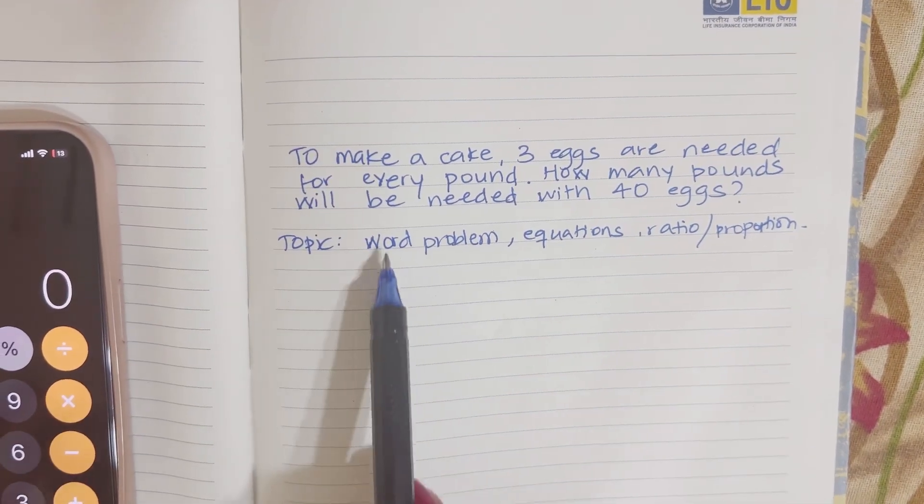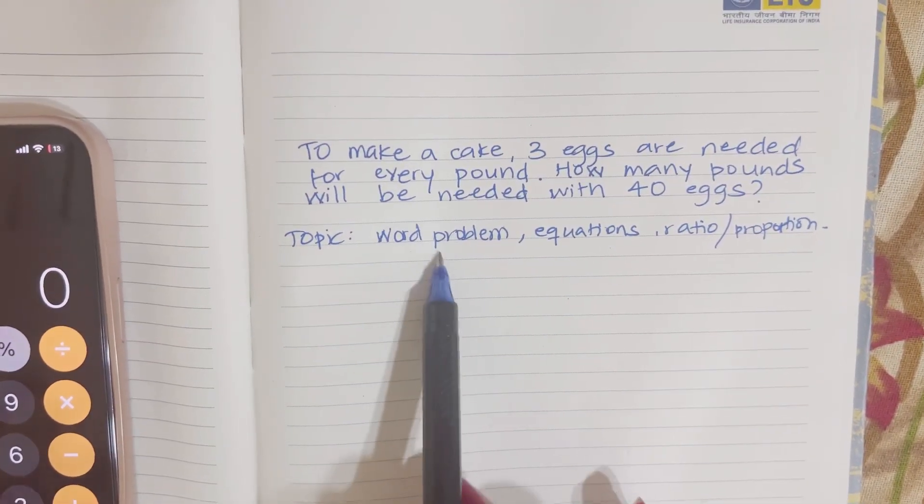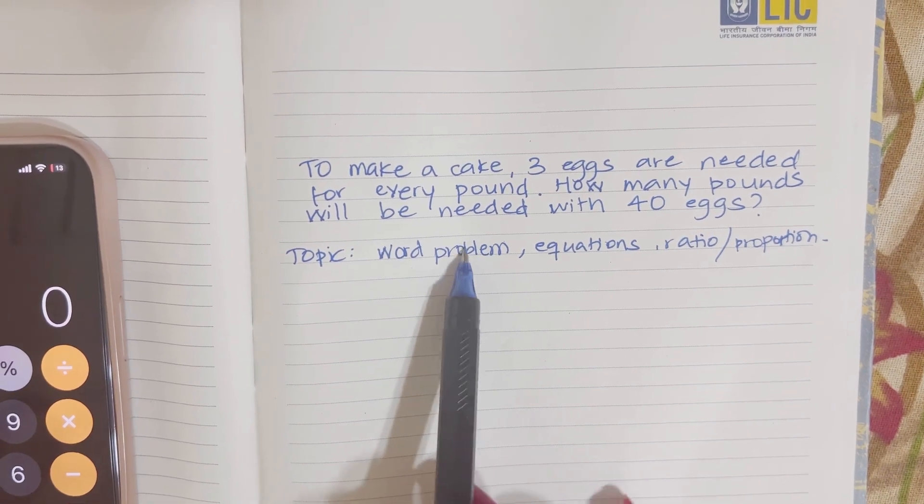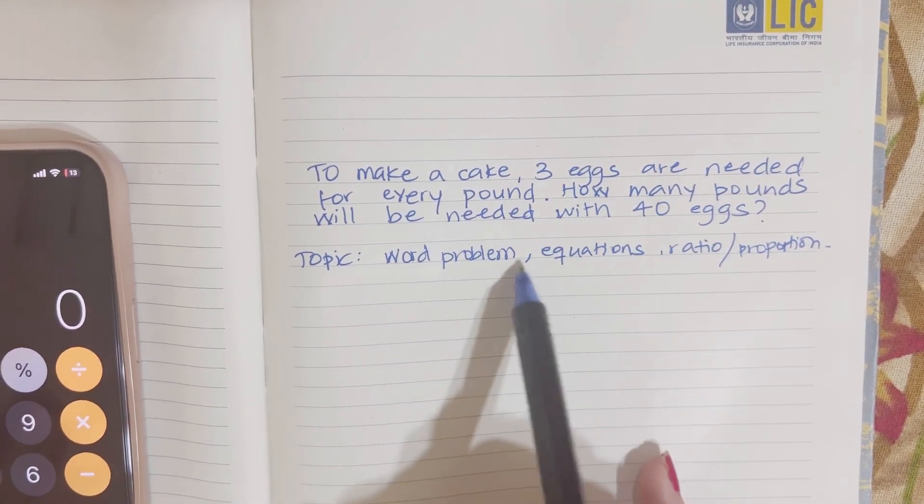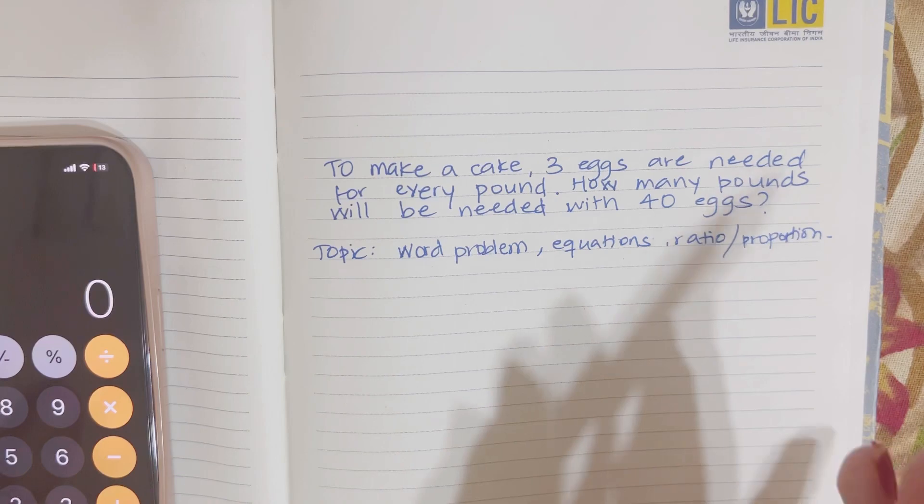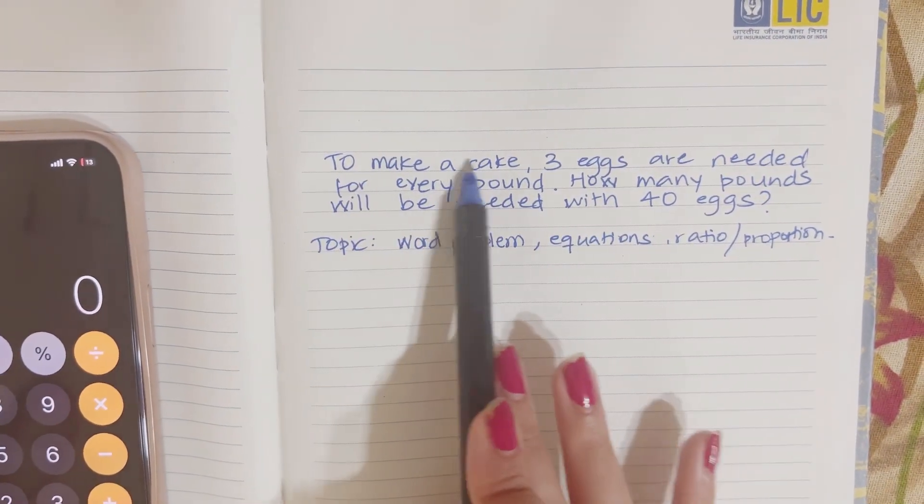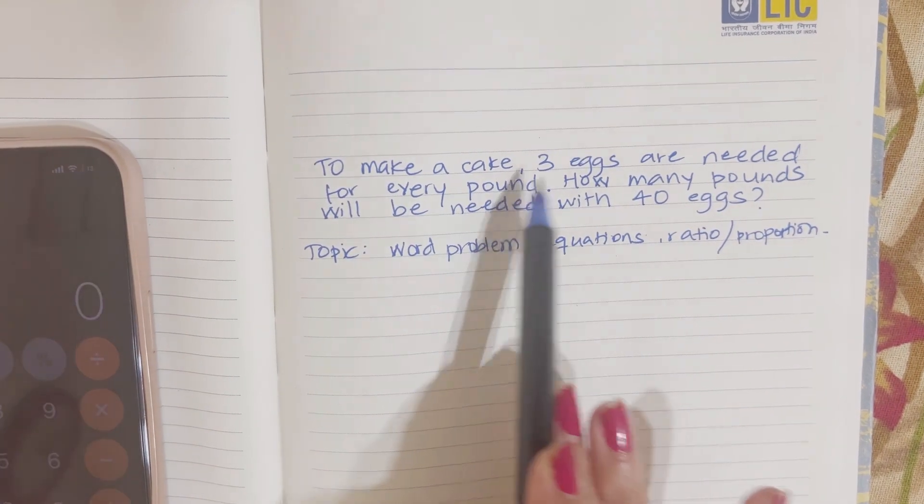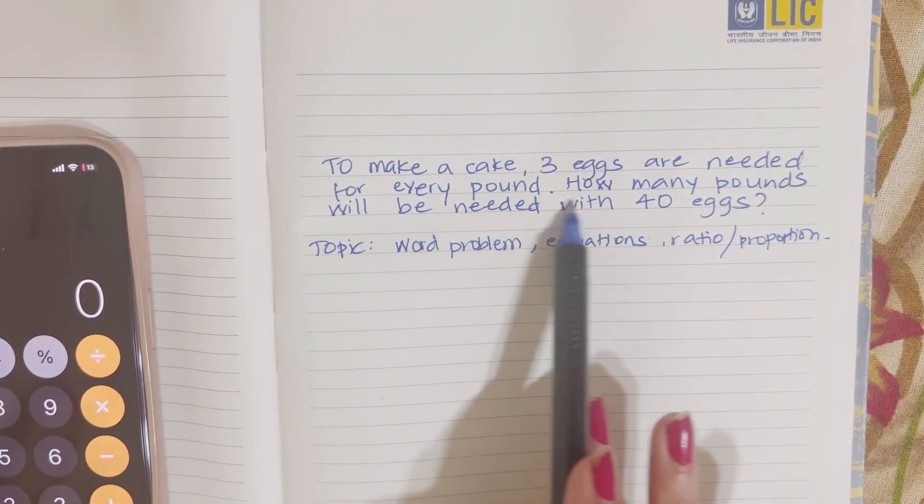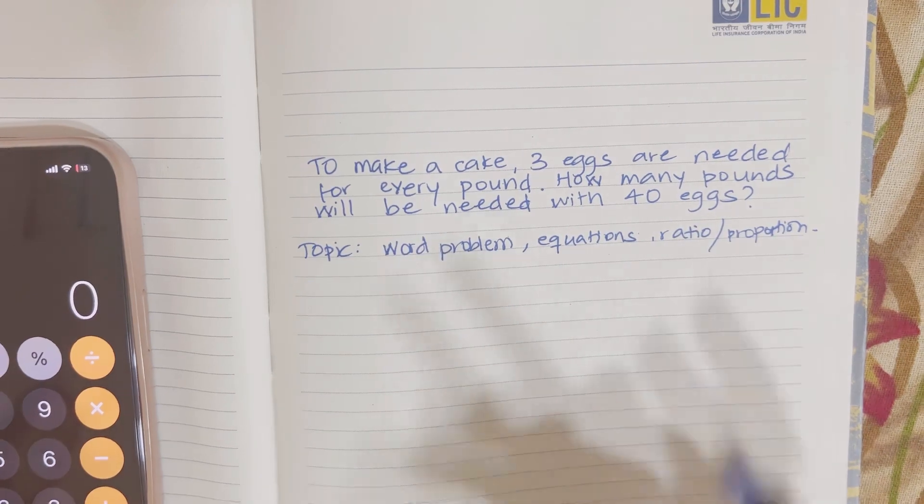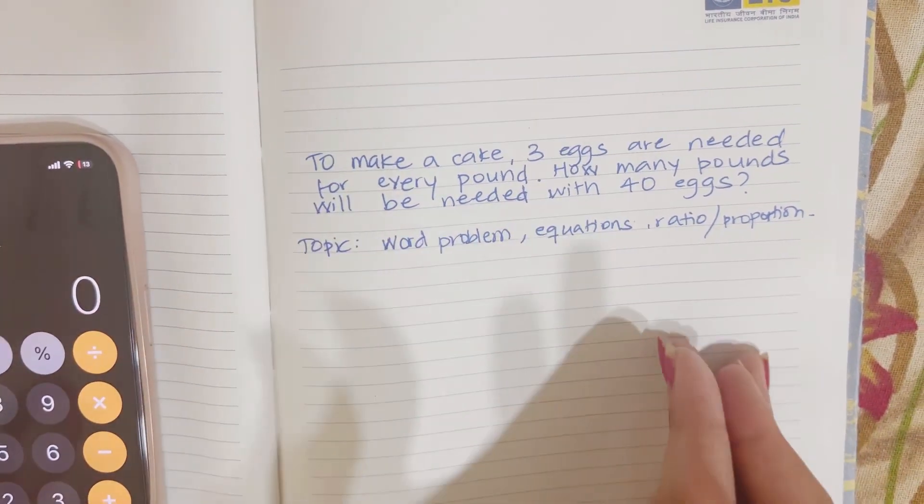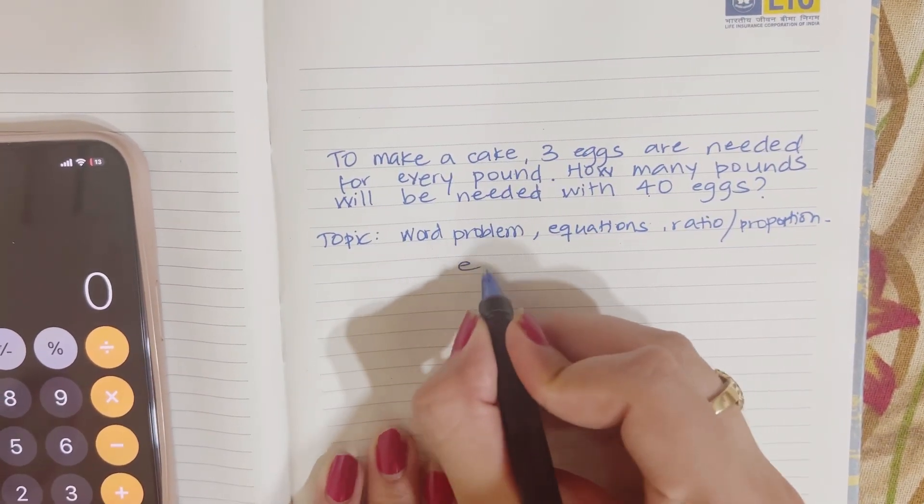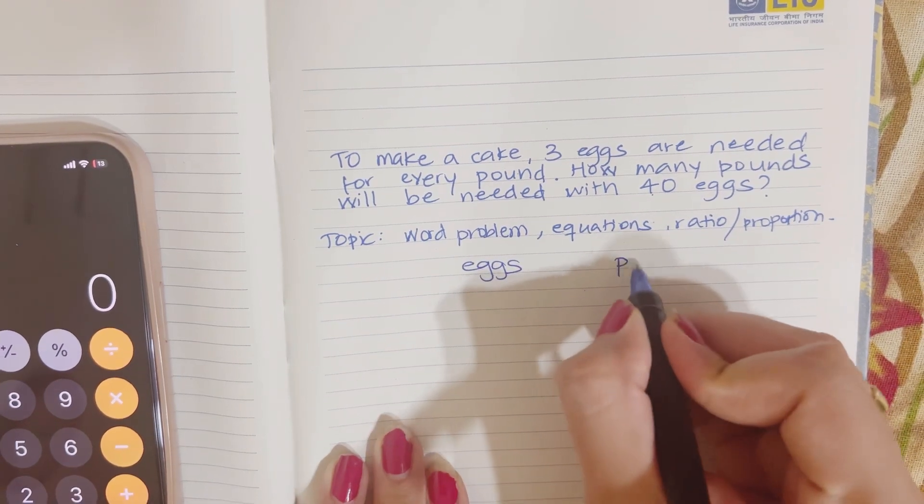The next one is word problems. I have videos on that, I'll be posting all the links down below. It also has equations and ratio and proportion. It's a very easy question. It says to make a cake, three eggs are needed for every pound. How many pounds will be needed with 40 eggs? We separate everything into one section.